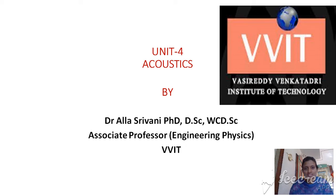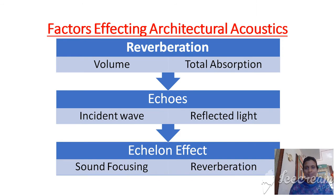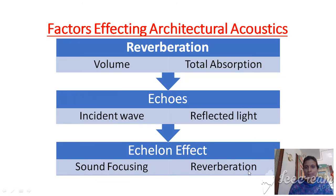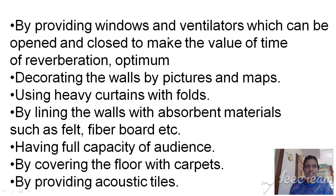The present topic we are discussing is factors affecting the acoustics of buildings. These are the factors which affect architectural acoustics: the first factor is reverberation, second is volume, third is total absorption, next is echoes. Echoes depend upon incident wave and reflected wave. Next is the echelon effect, which discusses sound focusing and reverberation. All these factors affect architectural acoustics.